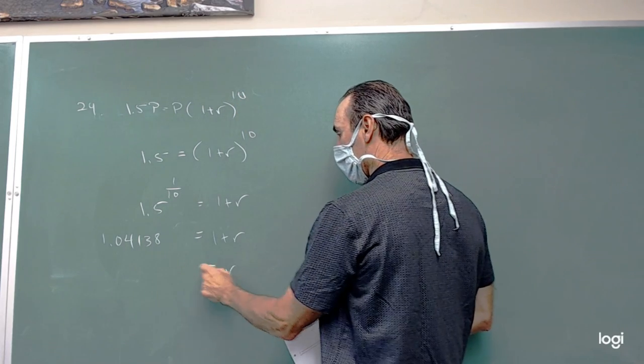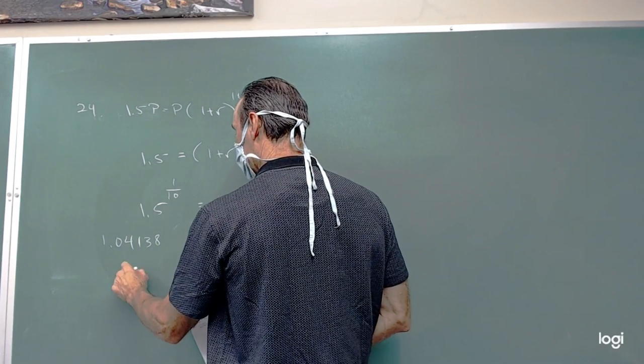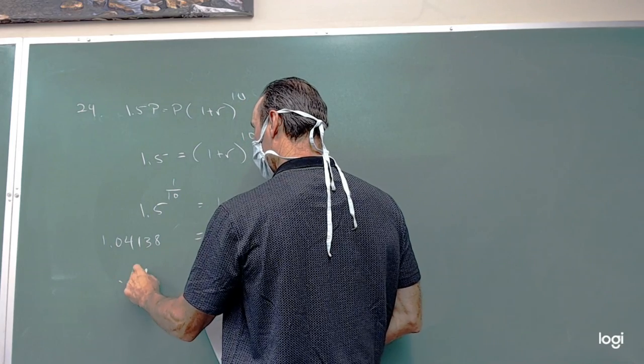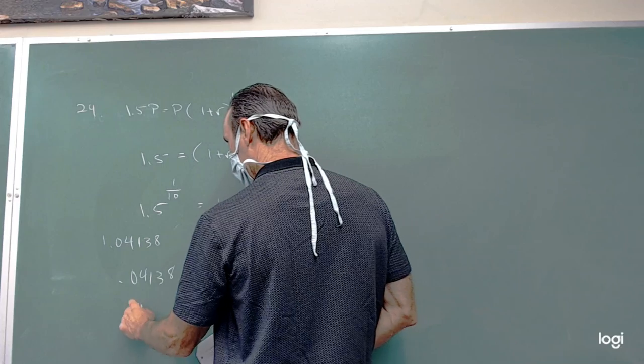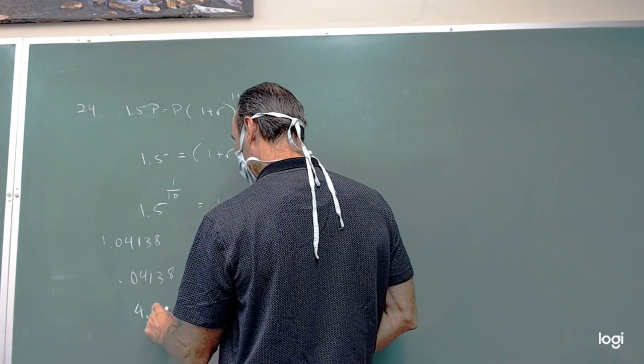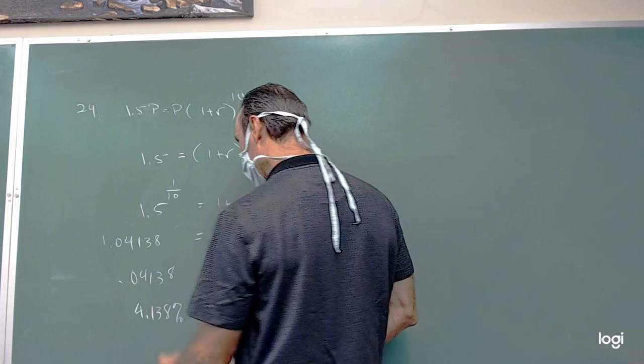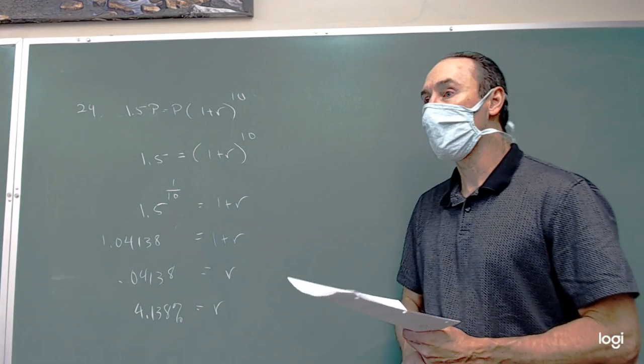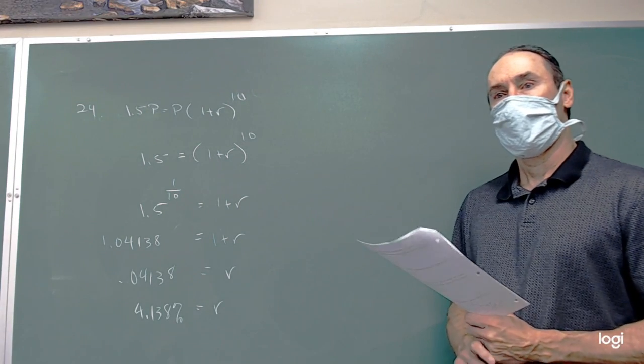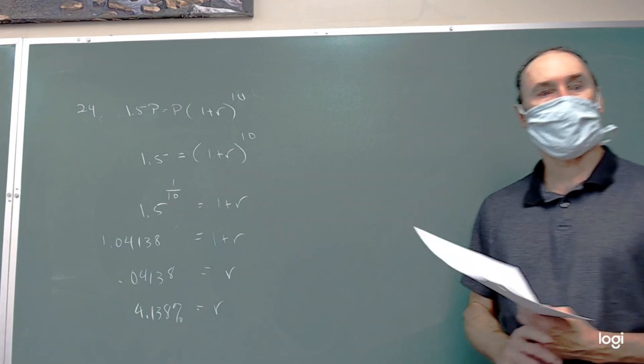Then we'll subtract off the 1, so that will just take us to 0.04138. As a percent, that's going to be 4.138%. That's the annual percent growth that we saw in order to get a 50% increase over 10 years.